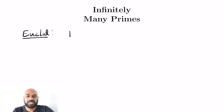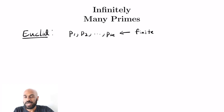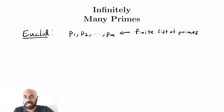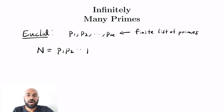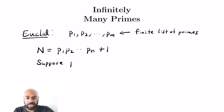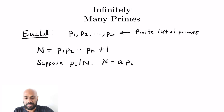Here's how Euclid's proof works. You assume that there's a finite list of primes P1 through Pk and then you construct a number that causes a problem. The number typically discussed is capital N, which is the product of all the primes plus one. So what's the issue with this number? Well, let's say that we picked one of these primes and it actually divided this number capital N. Then N would have to be a product of some integer and this prime P_i — say A times P_i.